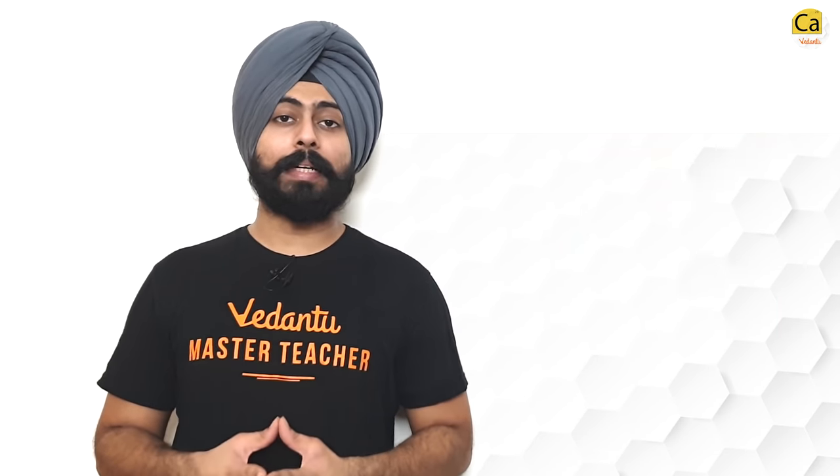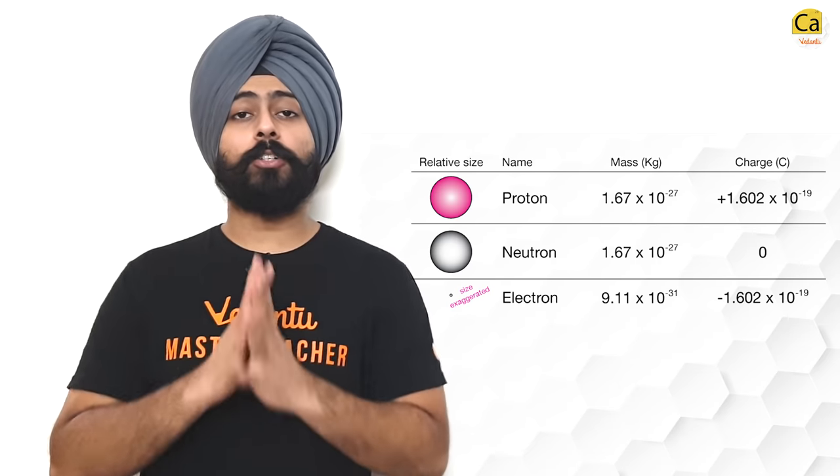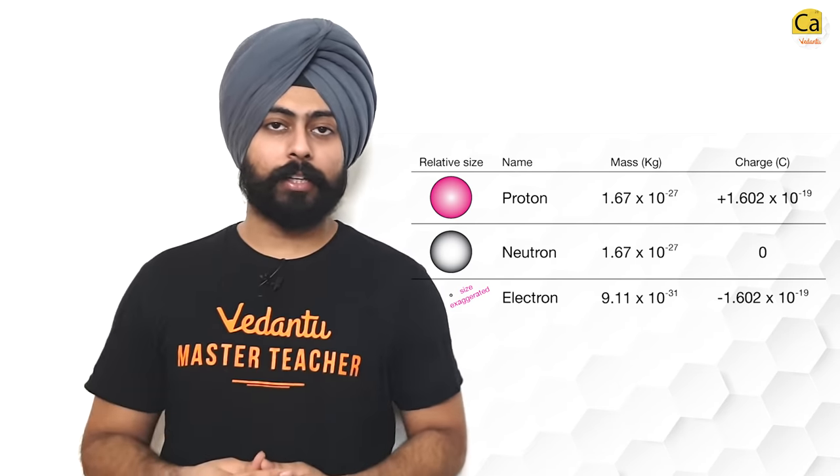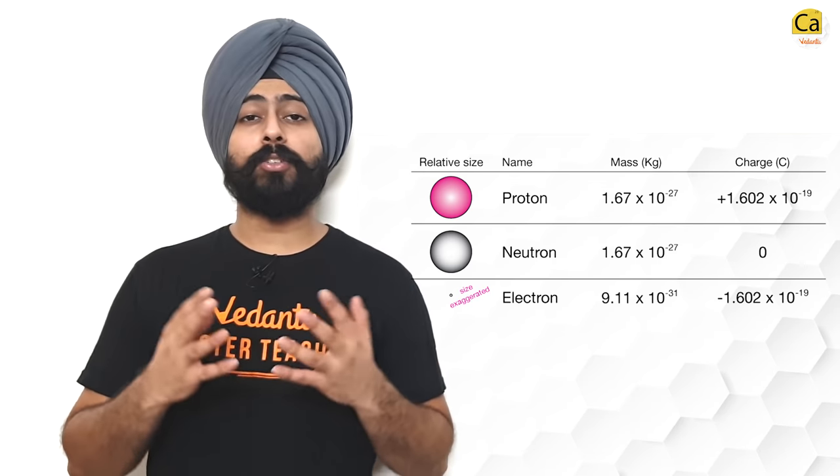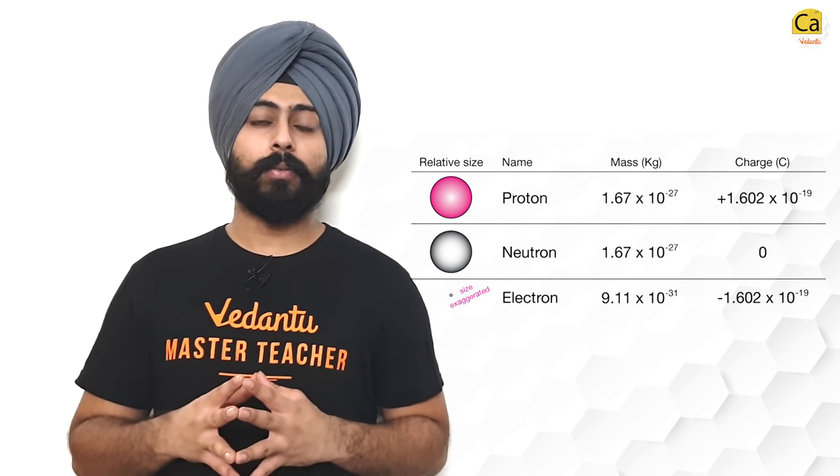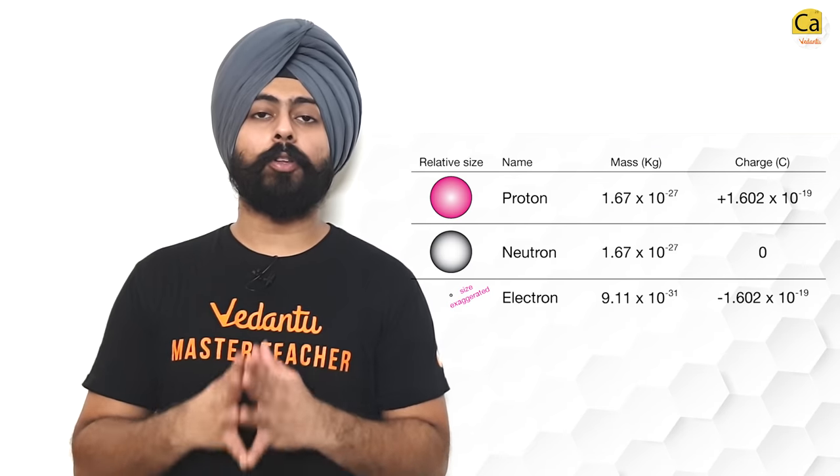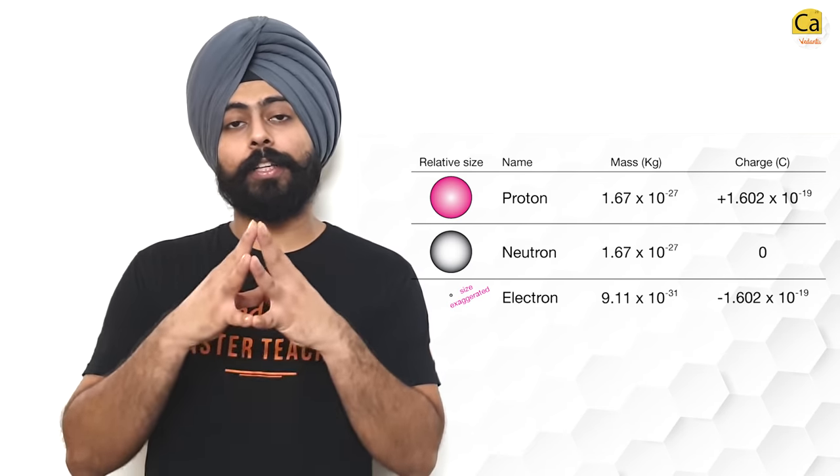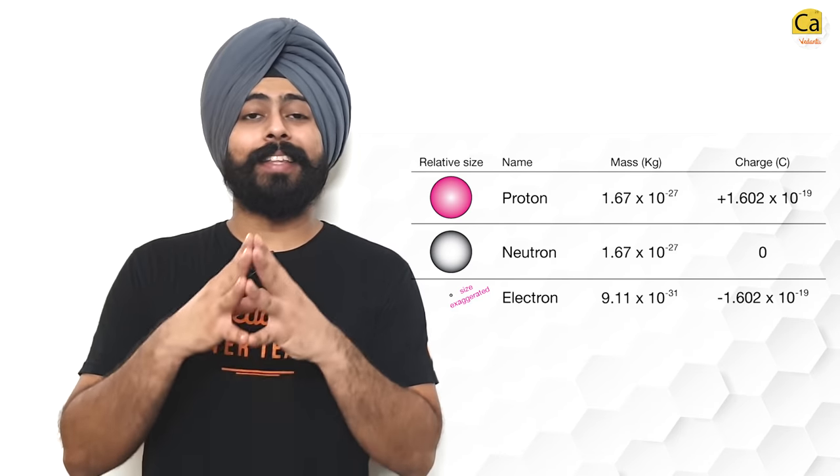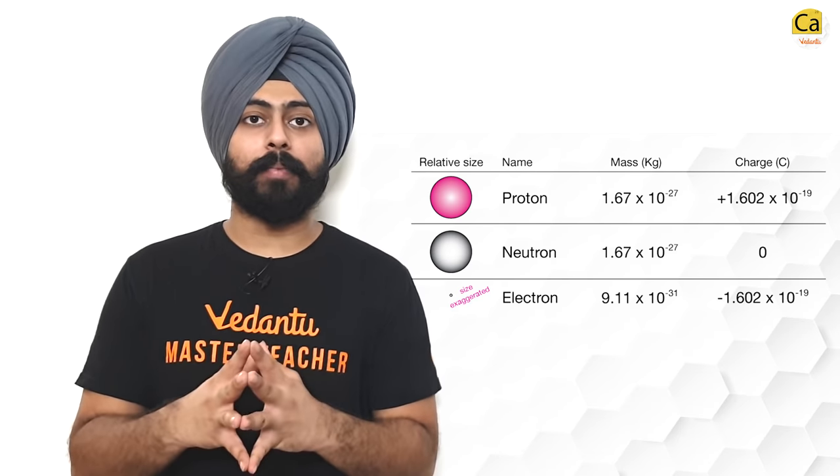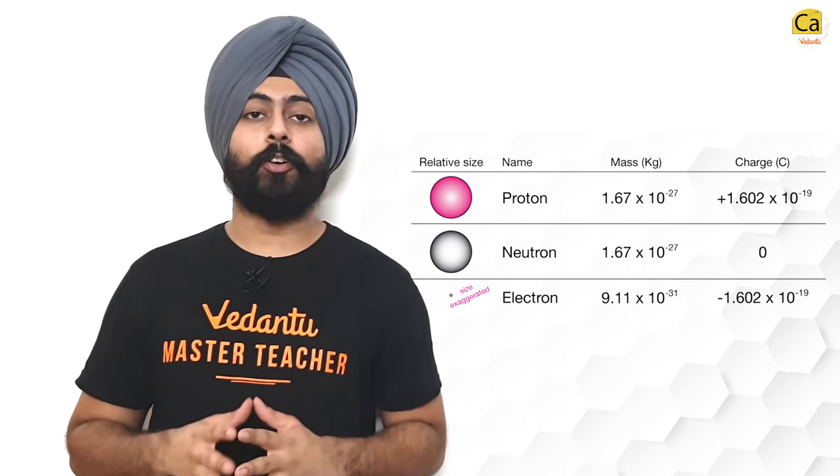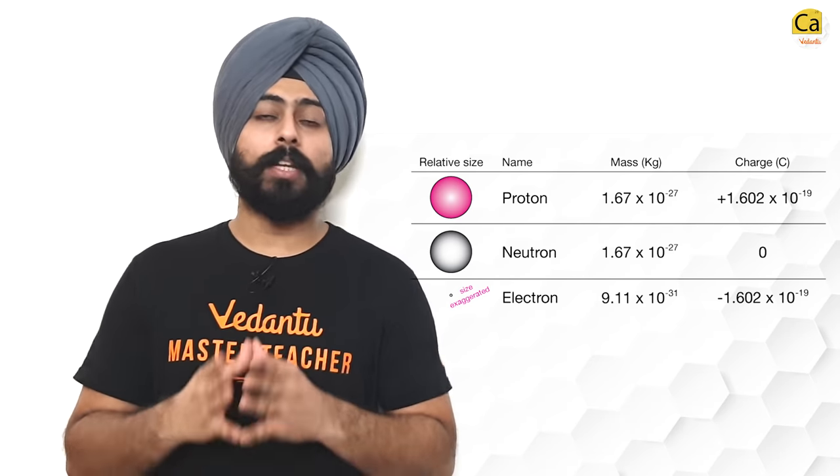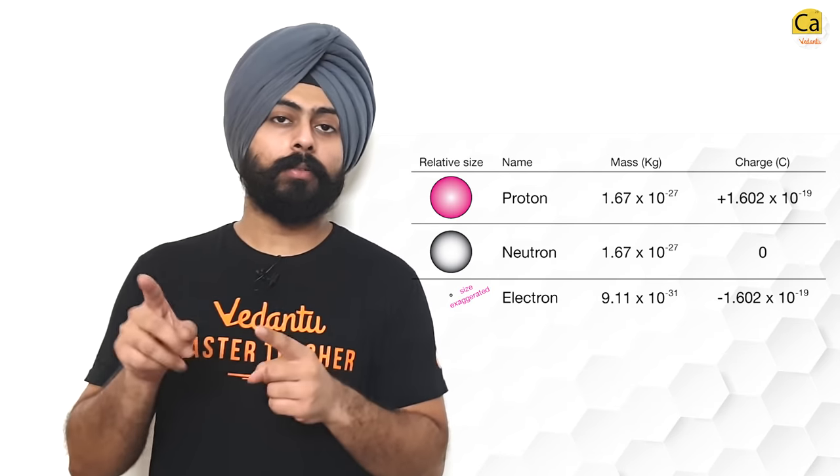Finally, what you have to remember is these values. Mass of the electron, 9.1 × 10⁻³¹ kg. Mass of the proton and mass of the neutron are almost equal, which is 1.67 × 10⁻²⁷ kg approximately. The charge on the electron and the charge on the proton, their magnitude is exactly the same. The signs are different. Electron has -1.6 × 10⁻¹⁹ Coulombs, whereas proton has the same amount with a positive sign.